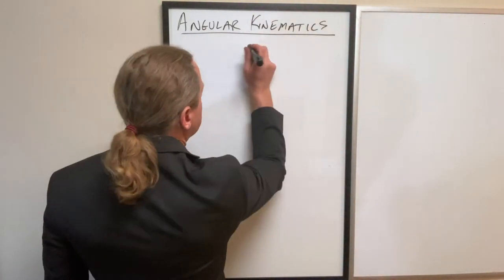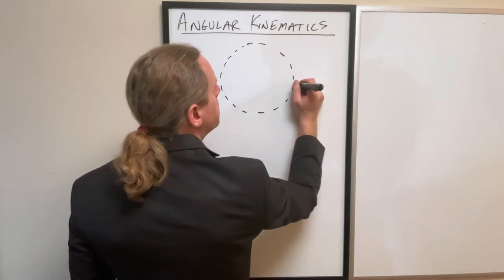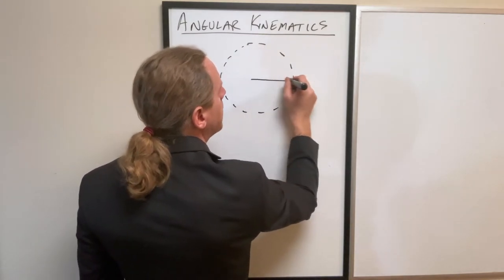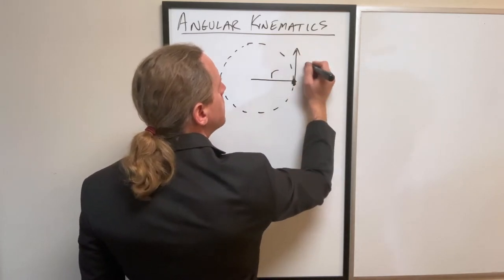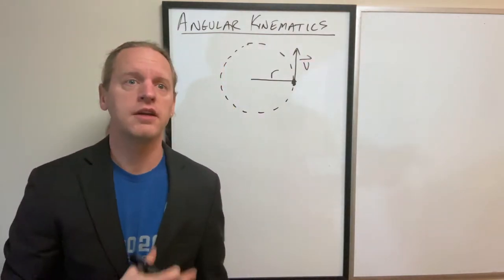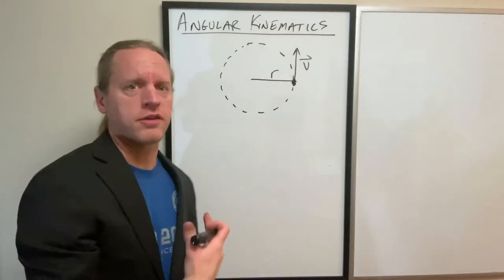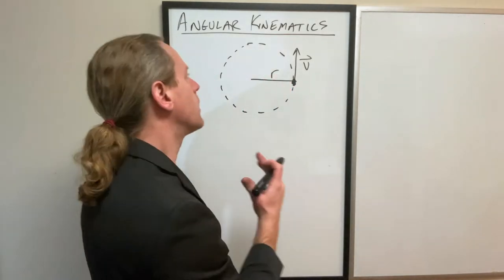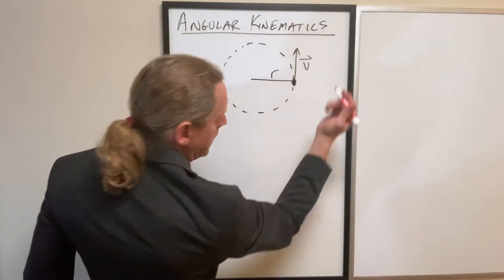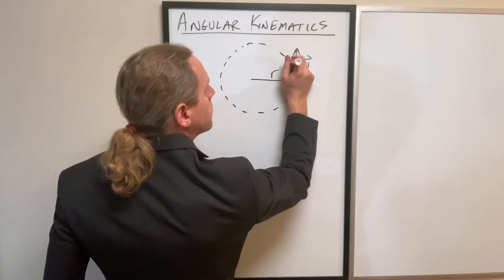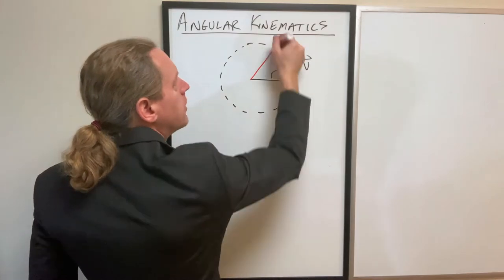Before we go further, let's make some basic assumptions. Let's say we have some object which is moving in a big circle with a radius r, so the object is right there, and at some given instant its instantaneous velocity is v. Let's assume that the radius is not changing, and over a given amount of time this object moves from their initial spot to their final spot.